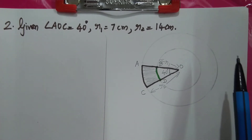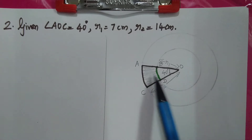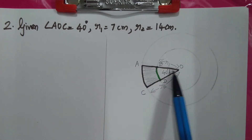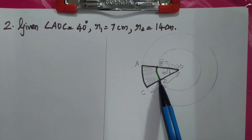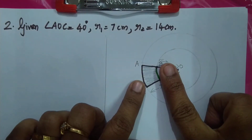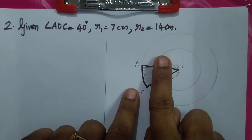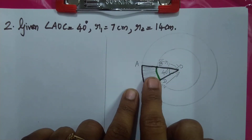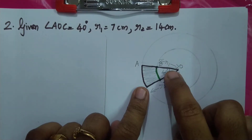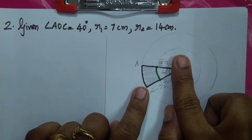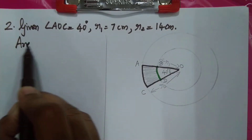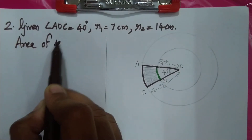The shaded region covers the full ring area between the two sectors. To find the shaded area, we take the area of the larger sector AOC and subtract the area of the smaller sector BOD. Area of sector AOC uses the formula theta by 360 into pi R squared.